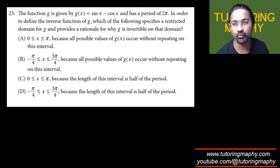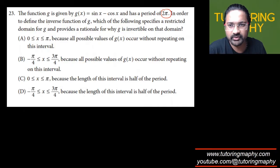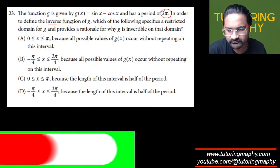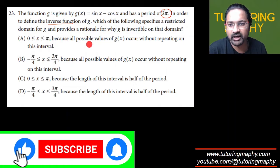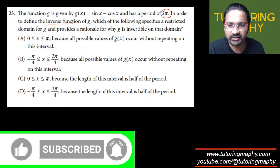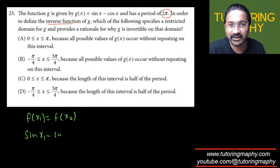We have to keep in mind that for any function to have an inverse, it should be a one-to-one function. For sine x minus cos x to be one-to-one, we need to ensure that if f(x1) equals f(x2), then that should only happen when x1 equals x2 — that is the condition for a one-to-one function.